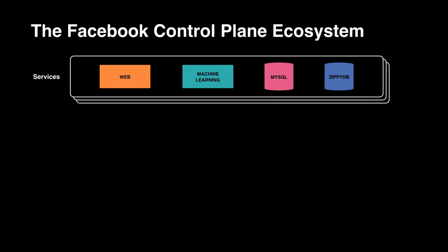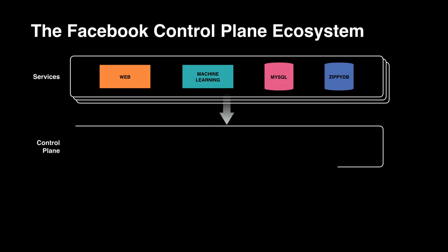We have front-end services like web servers. There's a bunch of back-end services like those that are training machine learning models. There are data stores with rich APIs like the MySQL relational database, which is used extensively at Facebook. We have data stores with simple APIs like a key-value store like ZipDB, also used extensively at Facebook. But all these services need more foundational services to run — this is the foundation of your house. This is the control plane.